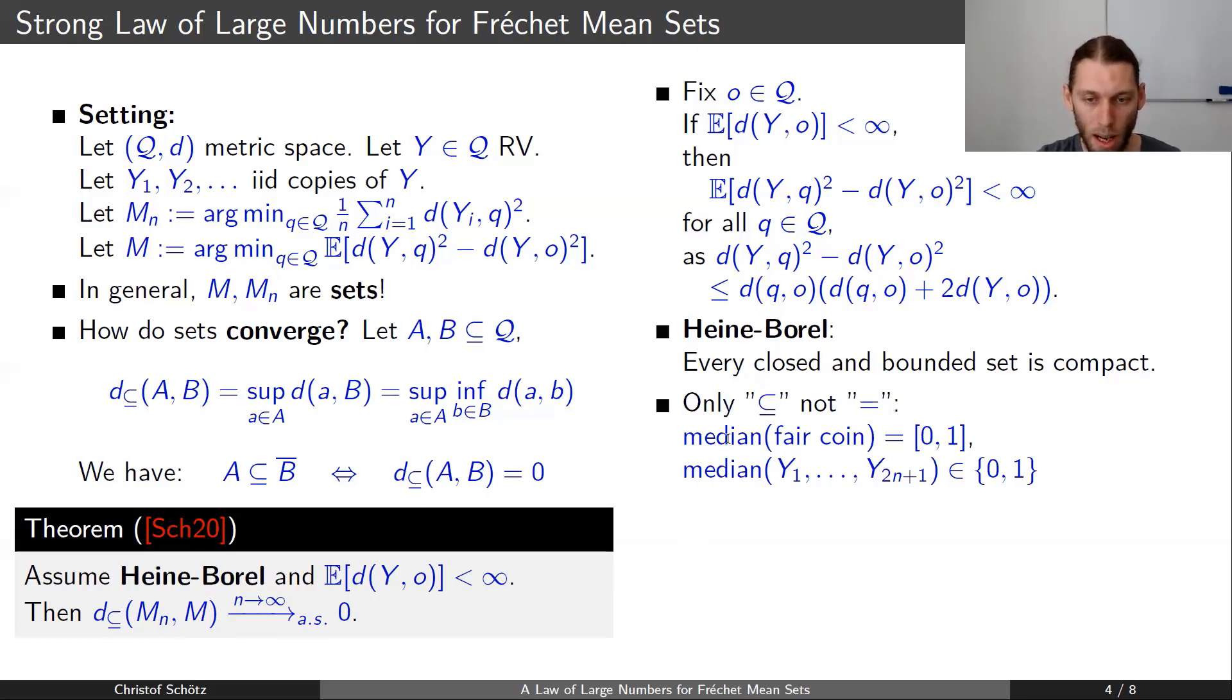As we've seen in the previous slide, the median is also a Fréchet mean, and if you take the median of a fair coin toss where one side is 0 and the other is 1, then the median is actually a set and it's the set of the values between 0 and 1.